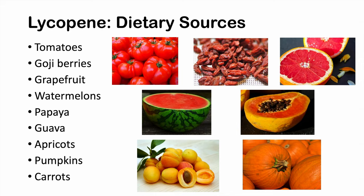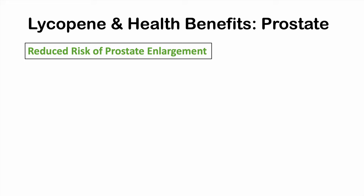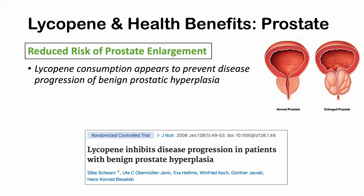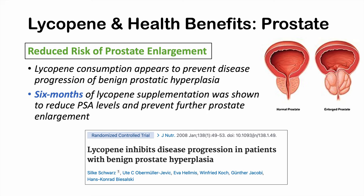One of the first health benefits shown in research is lycopene's ability to reduce risk of prostate enlargement. This comes from the randomized controlled trial entitled 'Lycopene Inhibits Disease Progression in Patients with Benign Prostatic Hyperplasia.' Lycopene consumption appears to prevent or slow progression of prostate enlargement, and six months of lycopene supplementation was shown to reduce PSA (prostate-specific antigen) levels and prevent further prostate enlargement.